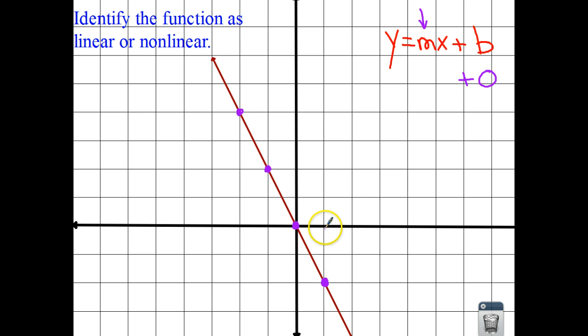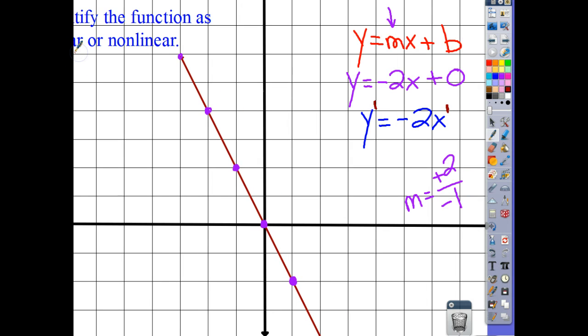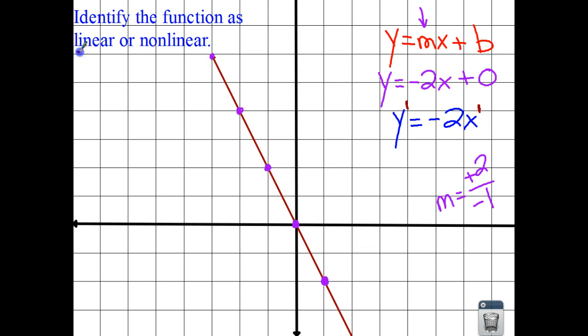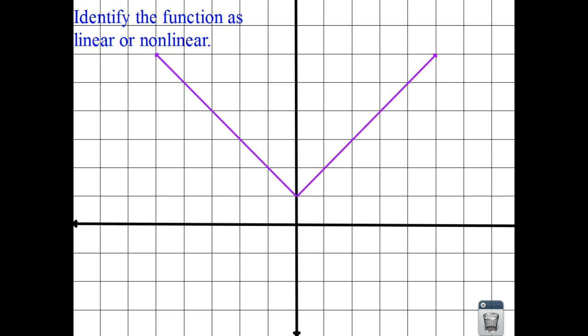We are going to go up two and left one, up two, left one, up two, left one, up two, and left one. And that means as a fraction or a rate of change, m is going to go up two and left one, which means we have an equation of negative two x plus zero. And if I were to simplify that, it's basically y is equal to negative two x plus nothing. We have a constant slope, constant rate of change. Our exponents are both to the first power. You don't have to write them in, but they are. And when we graph this line, it is absolutely straight through the grid. So it is linear.